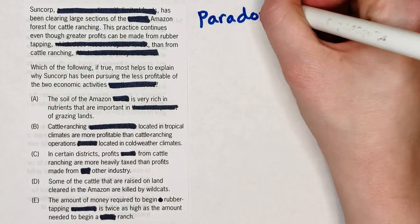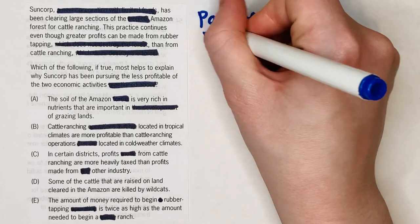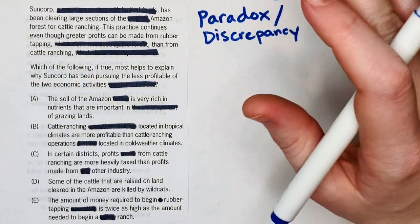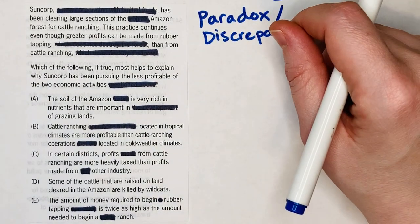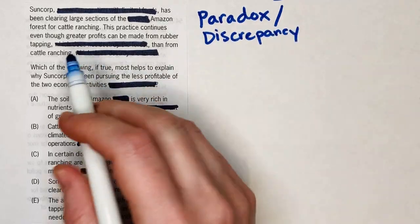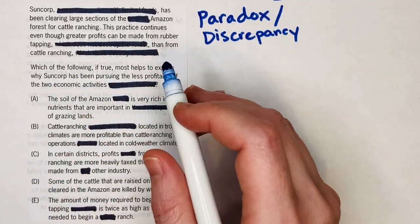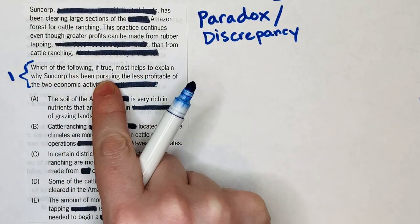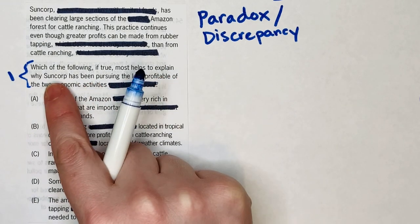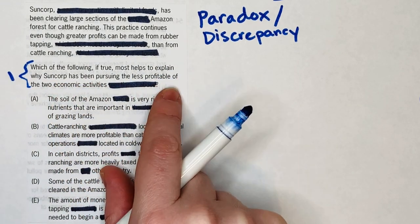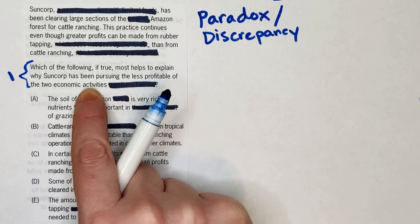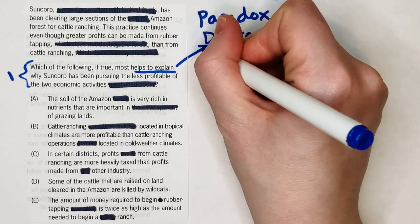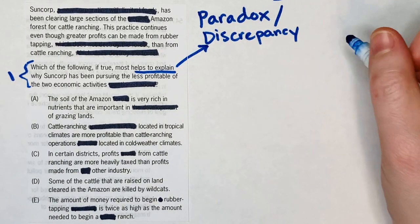Paradox questions are kind of fun. Most people call them discrepancy or 'explain the discrepancy' questions. They often have those two vocabulary words — not always, but often — in the question stem. Here it's a little less obvious because of the way they word the stem, which with CR is always where you should start. The question reads: 'Which of the following, if true, most helps to explain why Suncorp has been pursuing the less profitable of the two economic activities?' The language 'helps to explain' is the clue that we're looking at a paradox or discrepancy question.